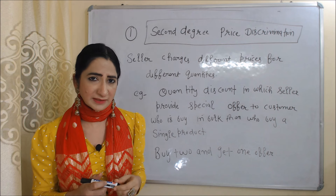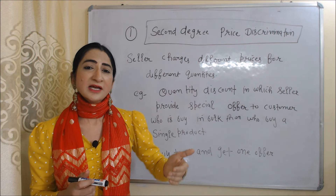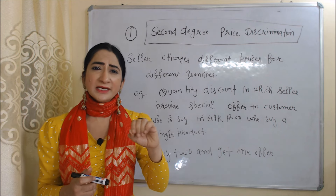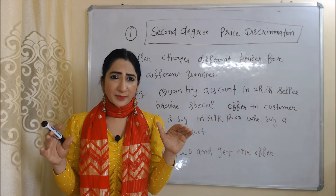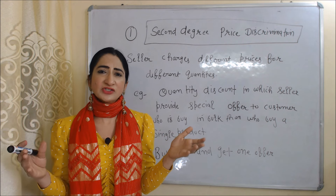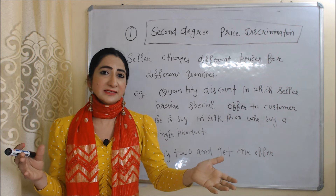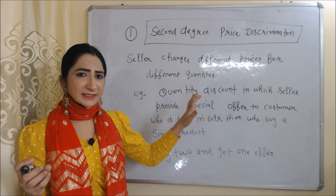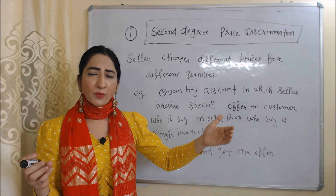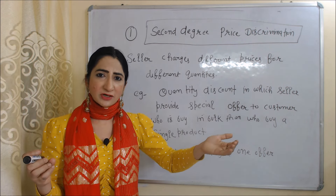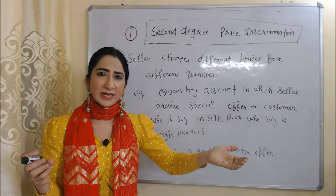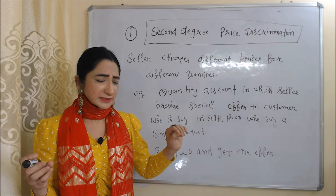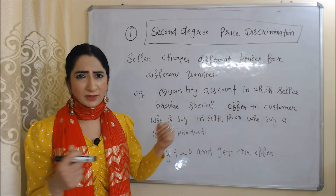In case of second-degree price discrimination, the seller charges multiple prices for the same product based on different quantities. For example, a quantity discount in which the seller provides a special offer to customers who buy in bulk compared to those who buy a single product — for example, a buy-two-get-one offer.